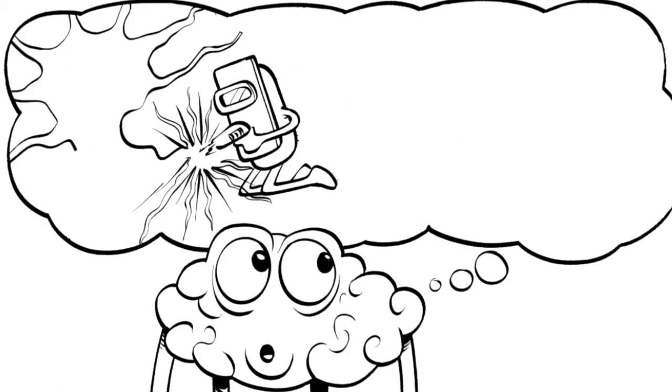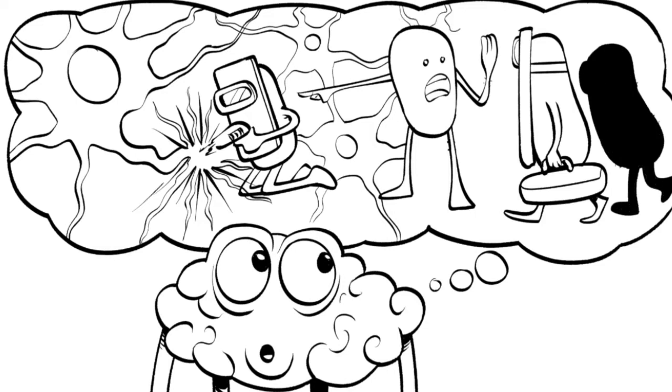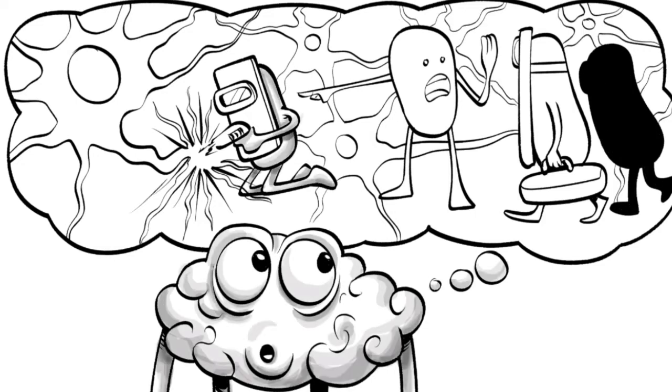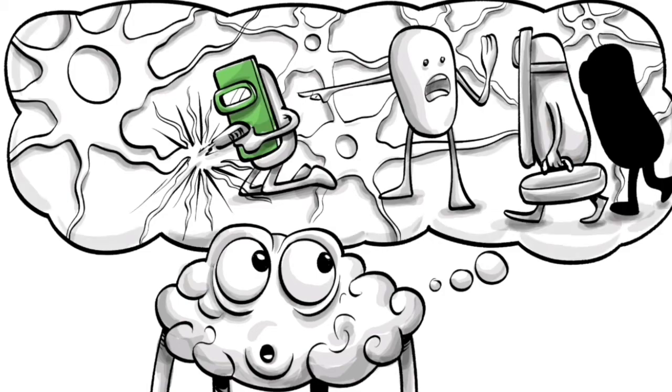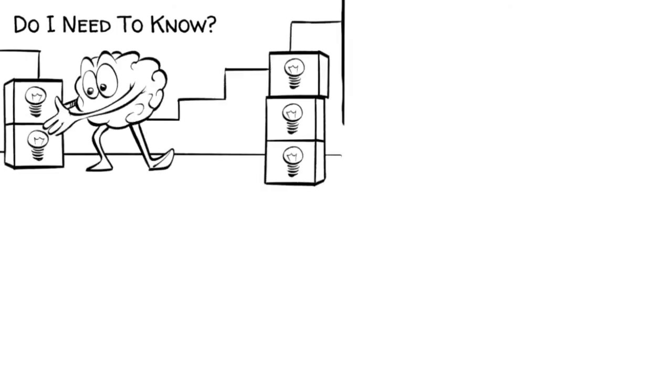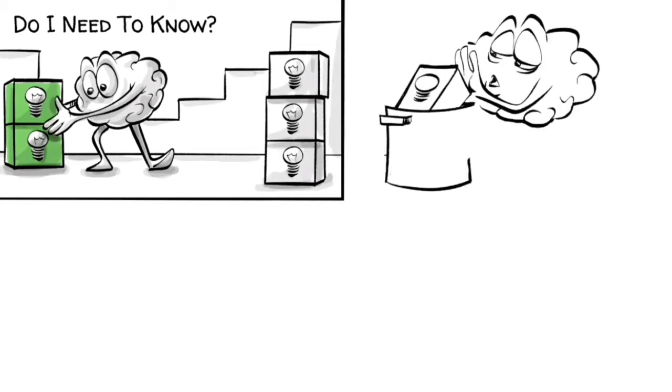In other words, your brain needs to build foundational neuron connections for new information to attach to, which is both why active learning is more mental work but also essential for learning. When we ask ourselves do I need to know, our brain separates between the material it finds worth remembering and the one it can forget.